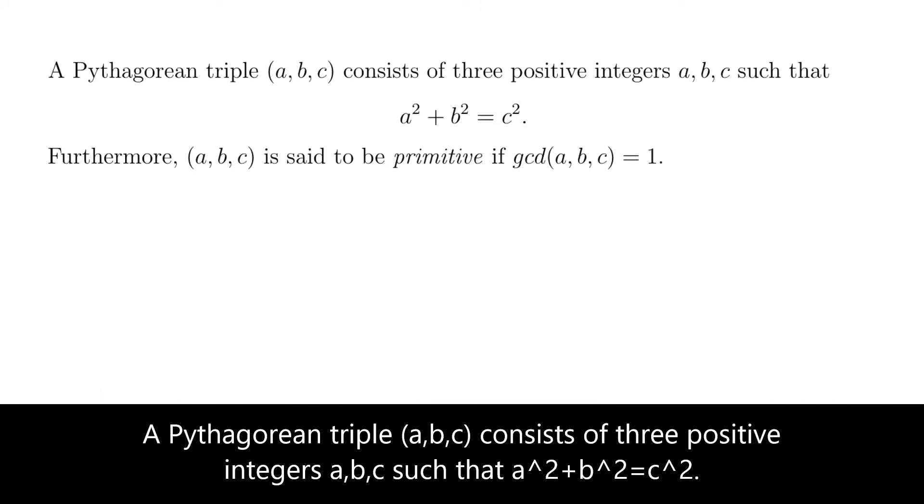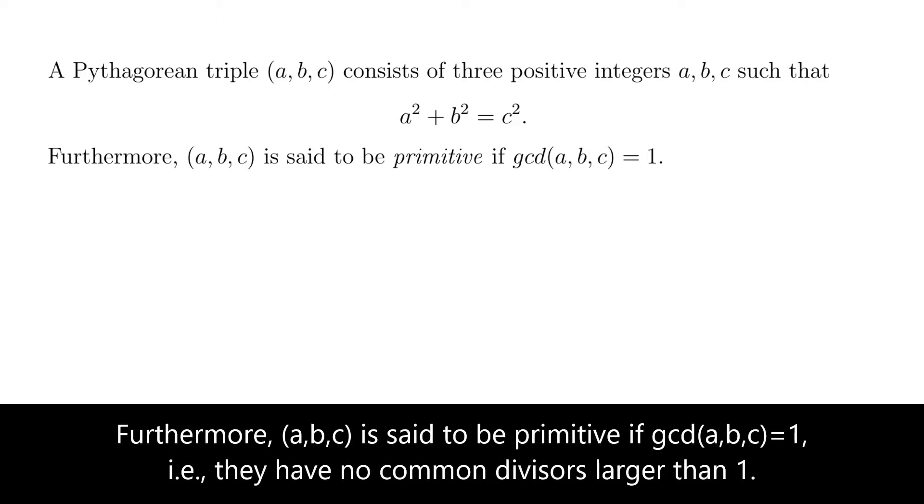A Pythagorean triple A, B, C consists of 3 positive integers A, B, and C such that A square plus B square equals C square. Furthermore, A, B, C is said to be primitive if GCD of A, B, and C equals to 1.